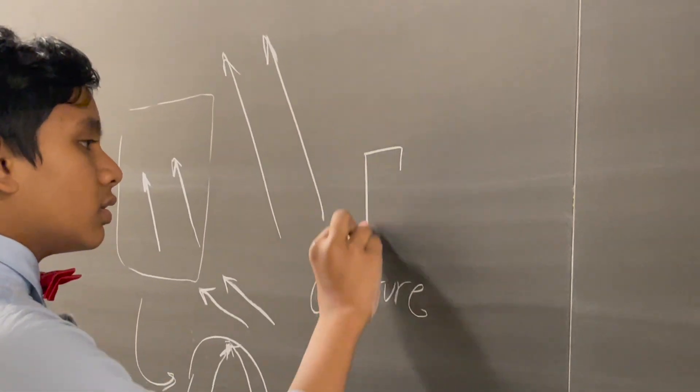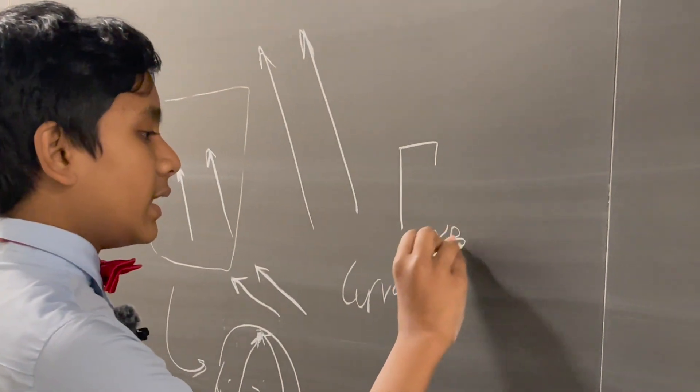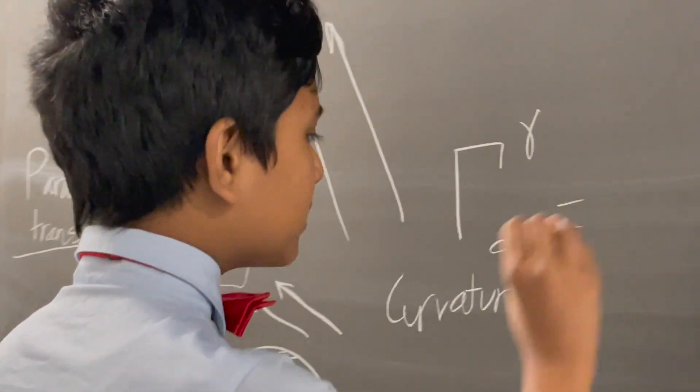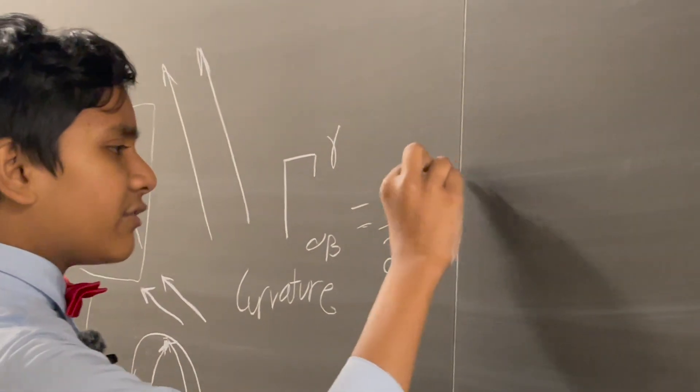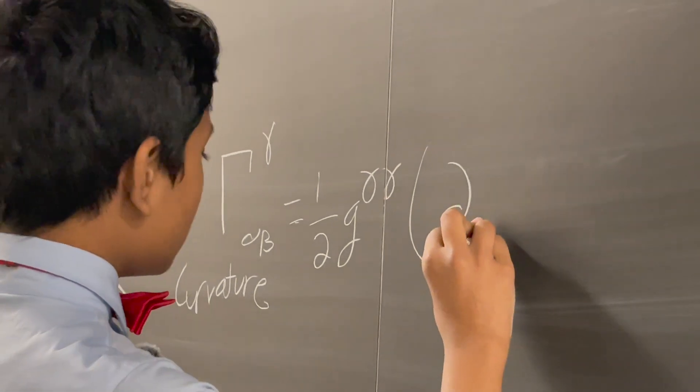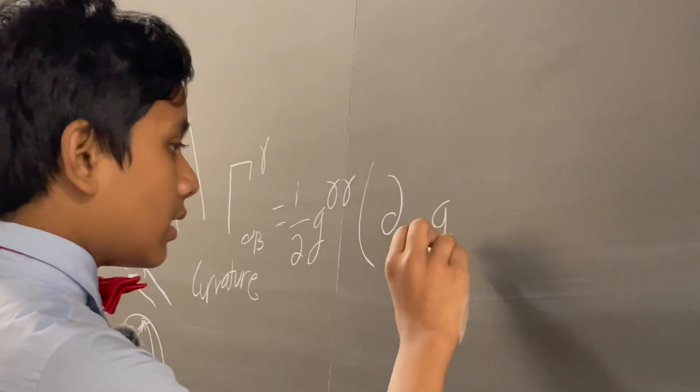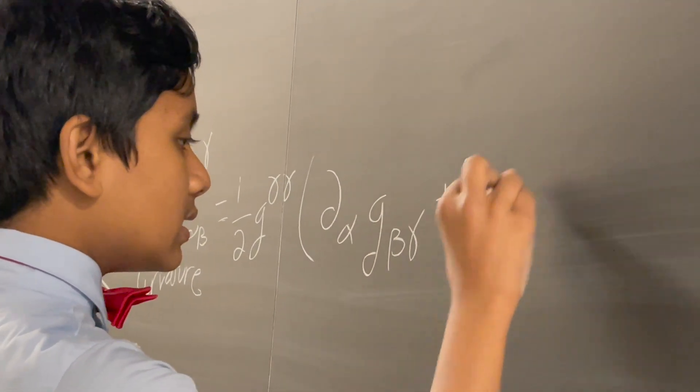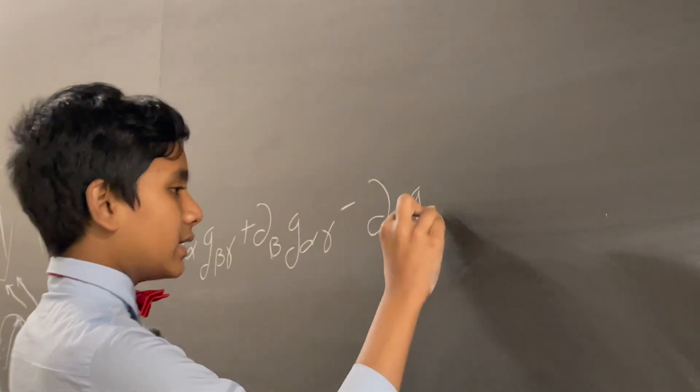And most of the importance lies in this one symbol called the Christoffel symbol, which I believe, I don't exactly remember, but I believe it's half Z gamma gamma times partial alpha Z beta gamma plus partial beta Z gamma alpha minus partial gamma Z alpha beta.